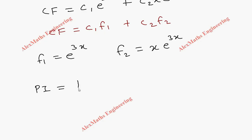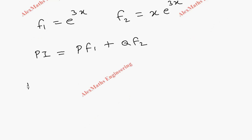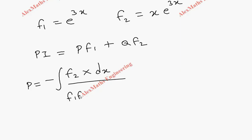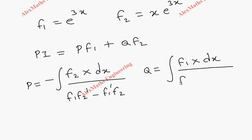The particular integral is PI = p·f₁ + q·f₂. For finding p, we use the formula: p = -∫(f₂·X dx) / (f₁f₂' - f₁'f₂). And q = ∫(f₁·X dx) / (f₁f₂' - f₁'f₂). Since both denominators are the same, it is better to find the term f₁f₂' - f₁'f₂ separately first.